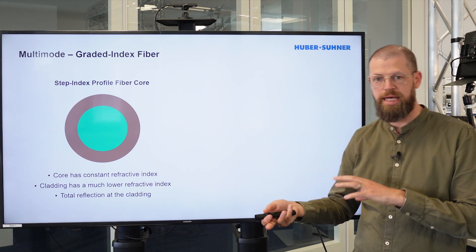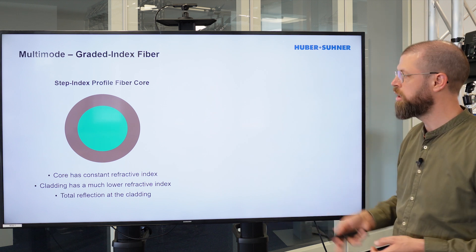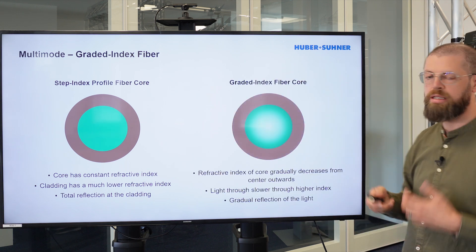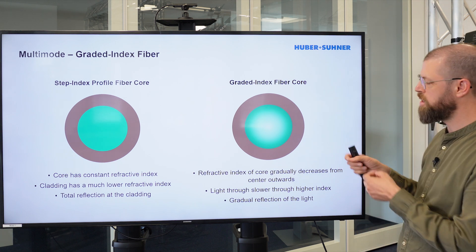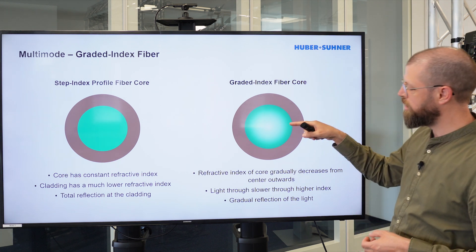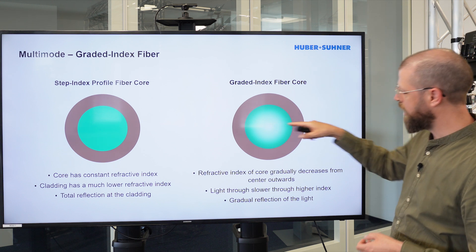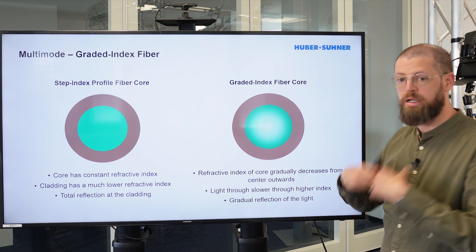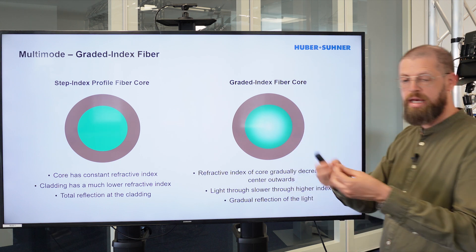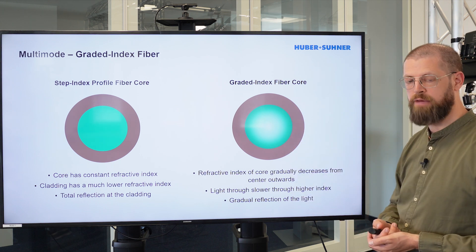The improvement and also the compensation of the modal dispersion was achieved by introducing the graded index fiber core. The point here is that the refractive index of the core gradually decreases from the center outwards. So in the center, we've got a higher refractive index than on the outside of the fiber core.